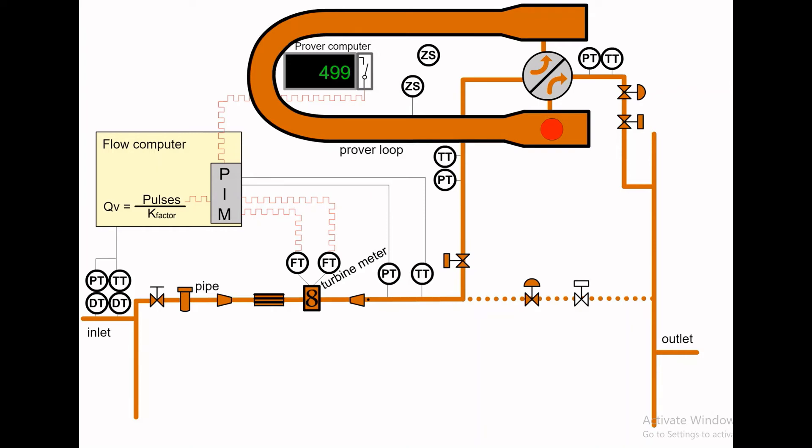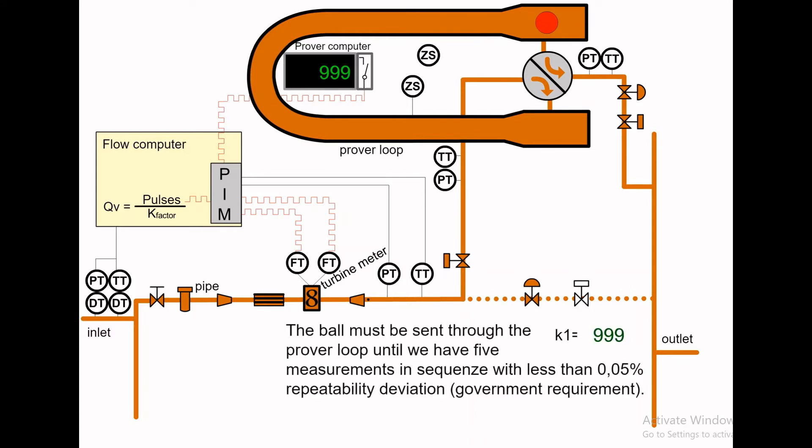The measurement must be taken for both directions, so the four-way valve is turned again. The ball must be sent through the prover loop until we have five measurements in sequence, each with less than 0.05% repeatability deviation. This is a government requirement.